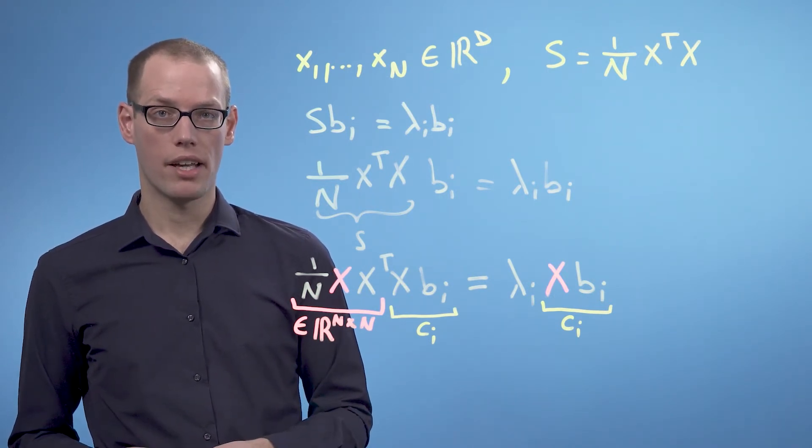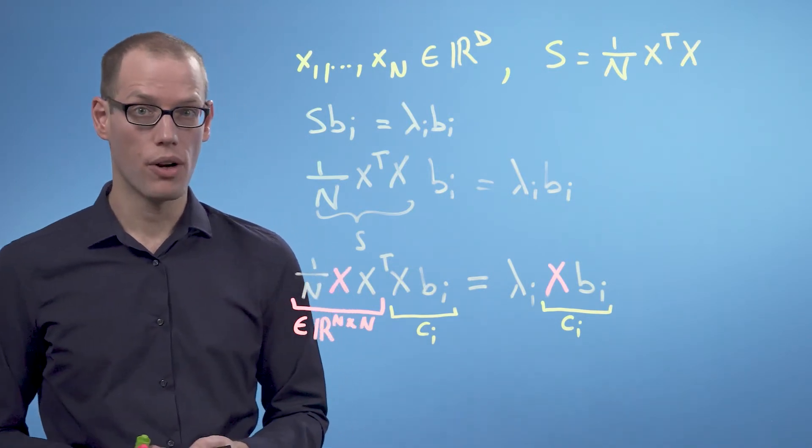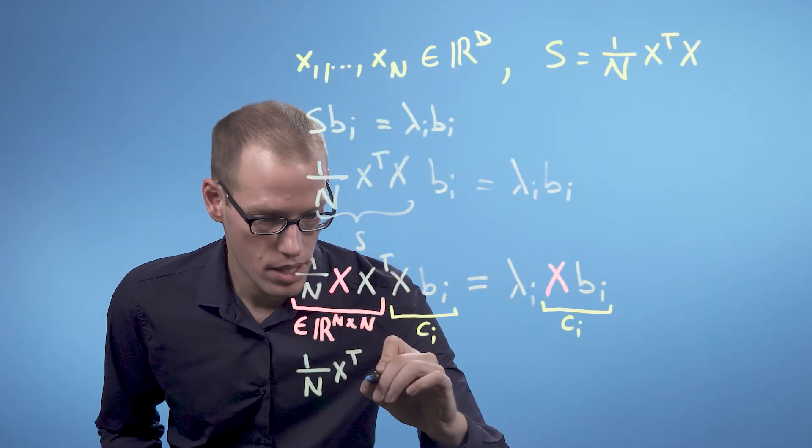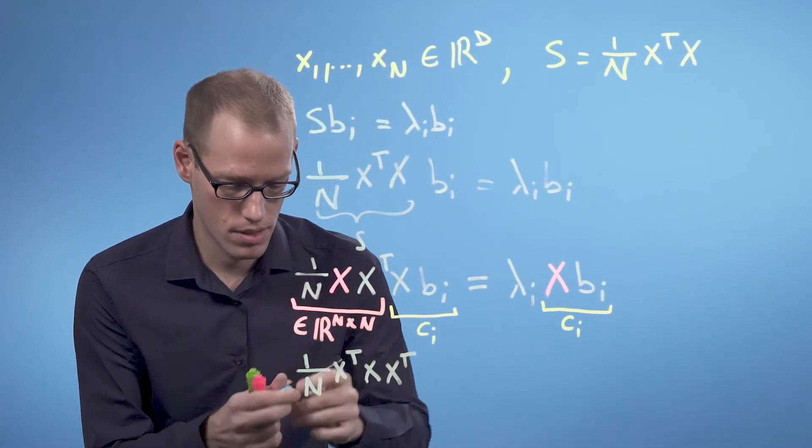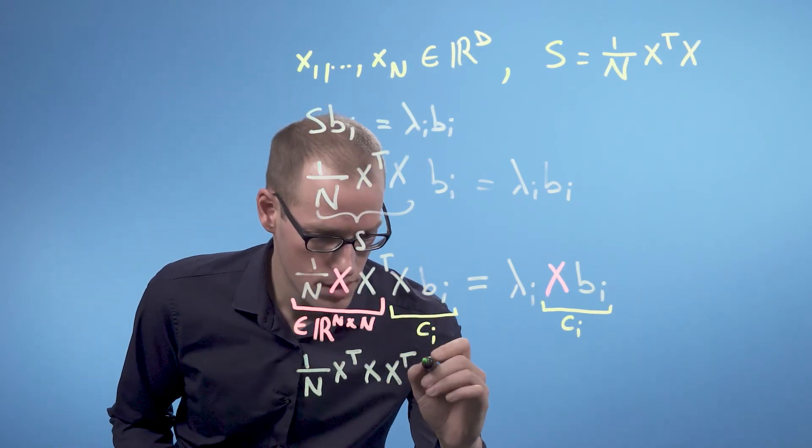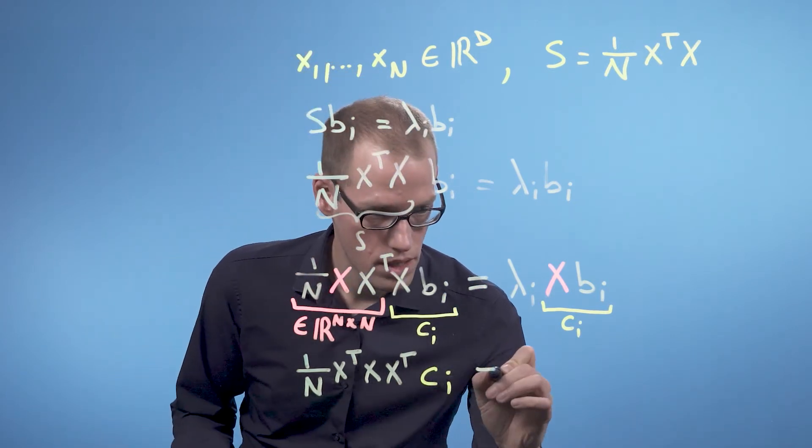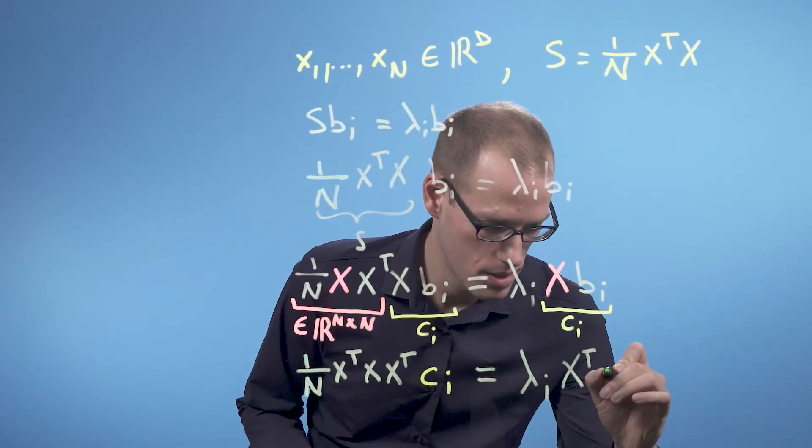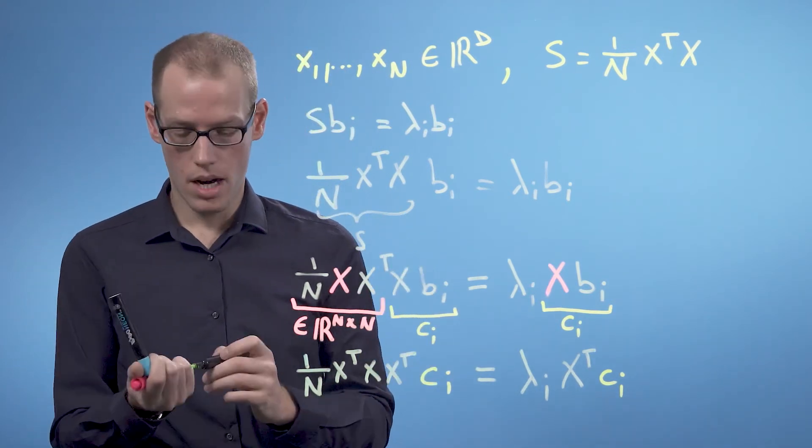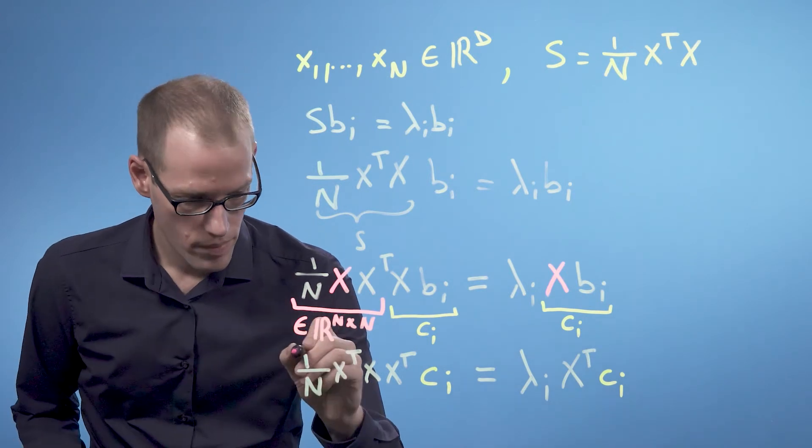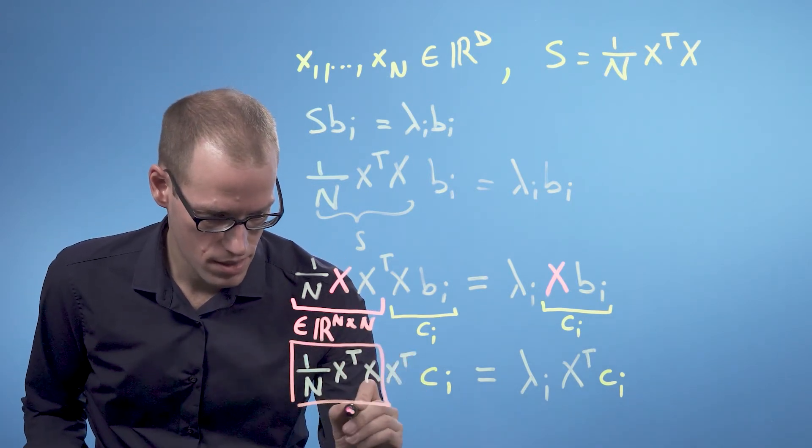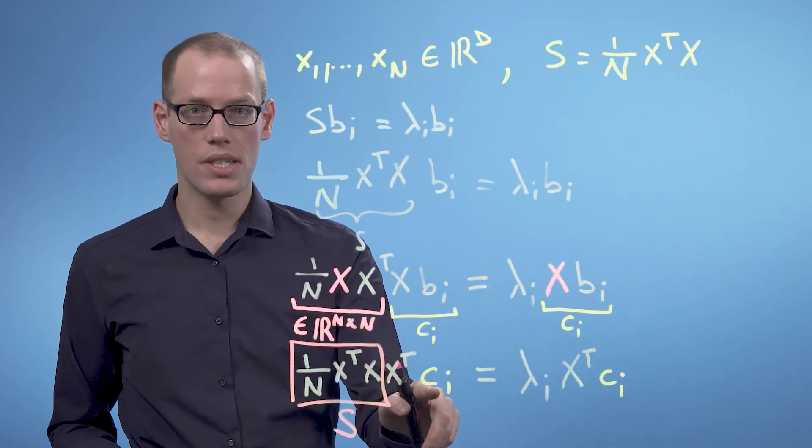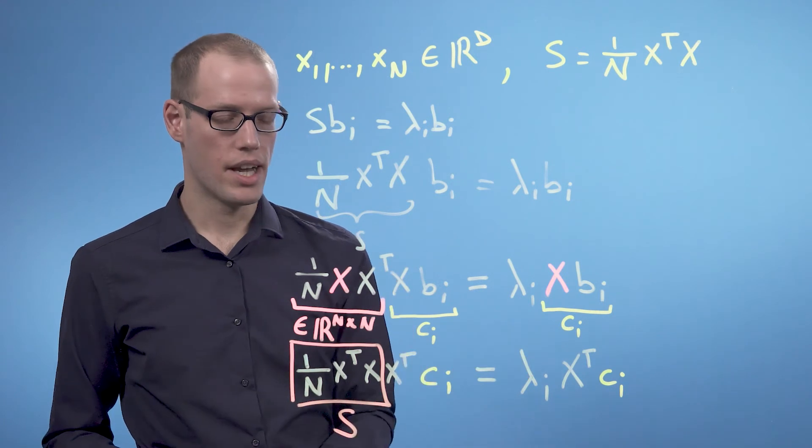If we left multiply our eigenvalue eigenvector equation with X^T, we get the following: 1/N X^T X X^T c_i equals λ_i X^T c_i. And now we find our S matrix again. This is S. And this also means that we recover X^T c_i as an eigenvector of S that belongs to the eigenvalue λ_i.